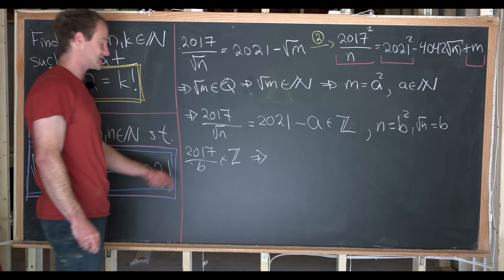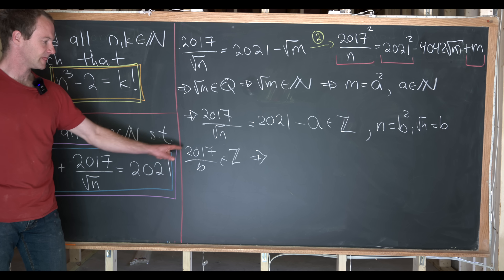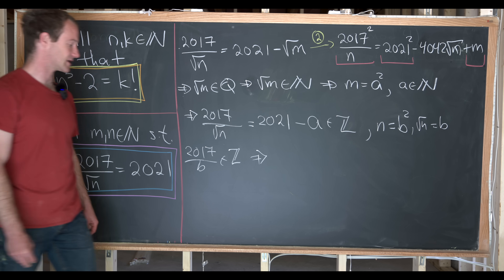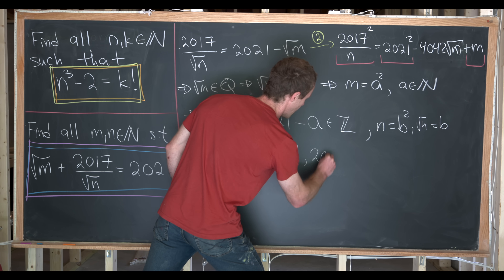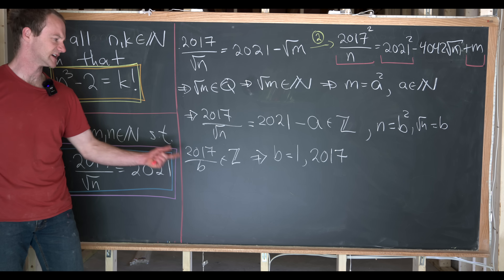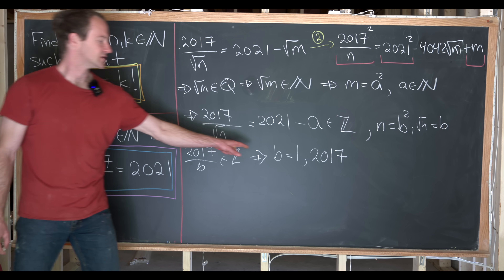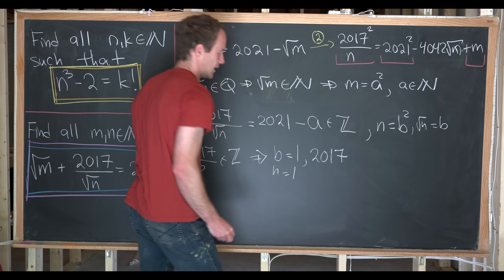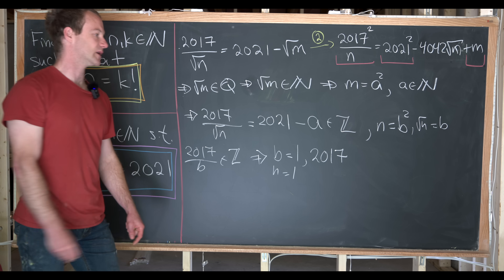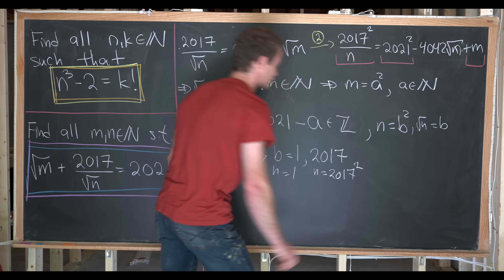Now, 2017 is prime — you can check that, it's not too hard. The fact that 2017 is prime tells us that b must equal 1 or 2017, since those are the only divisors. That's the only way we can get an integral value from this quotient. If b equals 1, then n equals 1. If b equals 2017, then n equals 2017 squared.